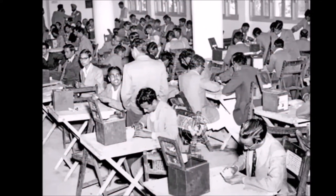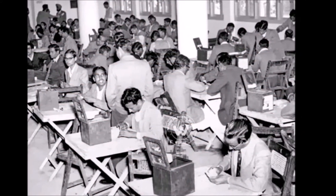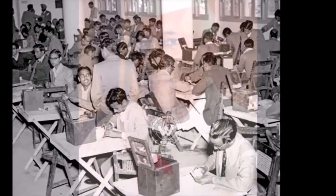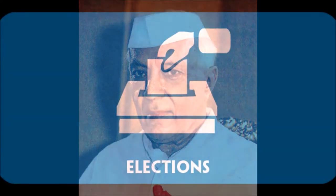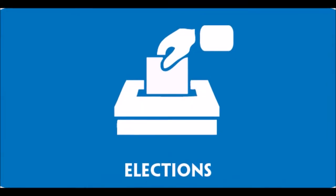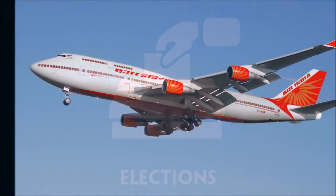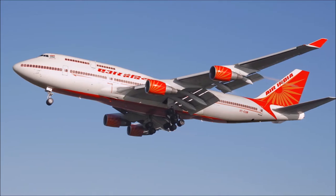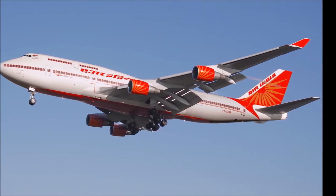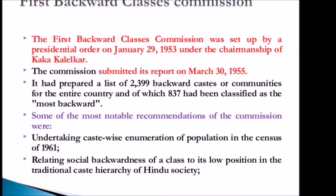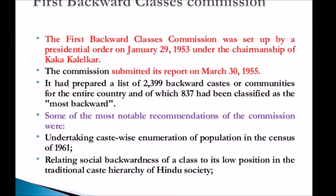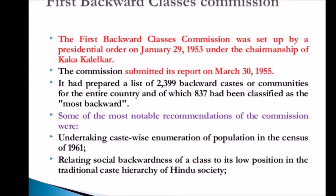1952: The first membership of Lok Sabha started and Jawaharlal Nehru formed the first government. The first general election was also held. 1953: Indian Airlines was created and the first Backward Classes Commission was also established.